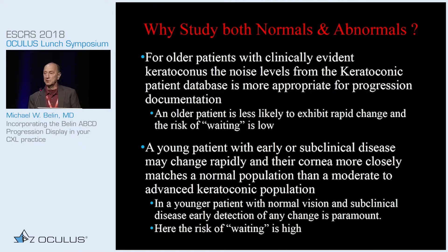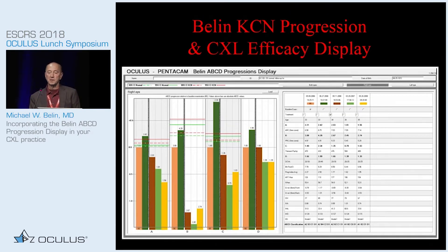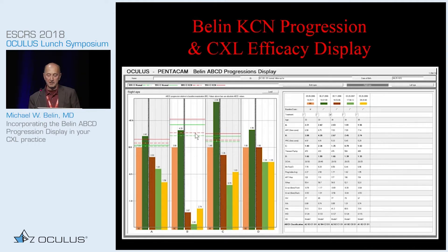In your very early, particularly younger patients with very early disease, that measurement noise probably mimics the normal population. But in your older patient with more established keratoconus that you may wait on to see if they progress, those measurements more closely mimic the keratoconic group. We came up with a one-sided confidence interval at both 80% and 95% — one-sided because we're only interested if the cornea thins or steepens. The machine automatically displays up to eight exams over time, showing the 80 and 95% confidence intervals for both the normal and keratoconic populations.